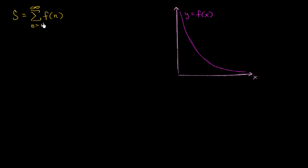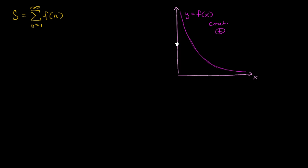Let's say s is the value that this infinite series converges to — we're going to assume that this series actually converges. The definition of the series is that each term is a function of n, and we're going to assume this is the same type of series we looked at for the integral test: namely that this function is continuous, positive, and decreasing over the interval that we care about.